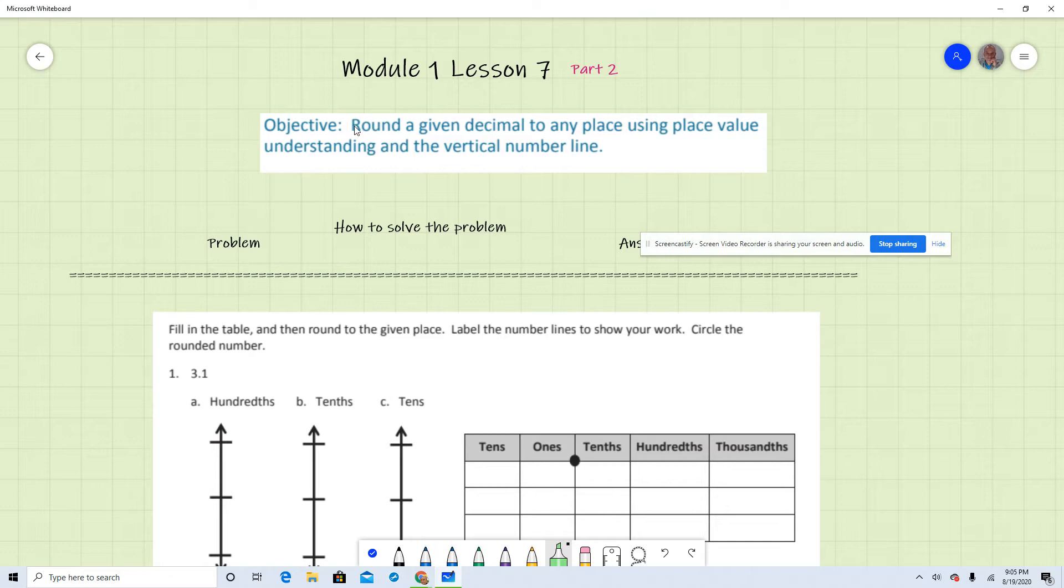So it says right here, round a given number, a given decimal to any place using place value understanding. And we're going to use also the vertical line. So we're going to have to use two tools this time to make this a successful lesson.